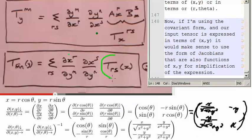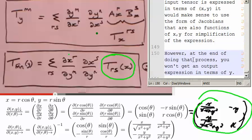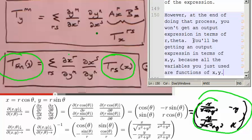Now, if I'm using this covariant form, and our input tensor is expressed in terms of x,y, it would also make sense to use the form of the Jacobians that are also functions of x,y, for simplification of the expression. However, at the end of doing that process, you're not going to get an output expression in terms of y, or in terms of r theta. You'll be getting an output expression in terms of x,y, because this is in terms of x,y, this is in terms of x,y, all the variables you just used are functions of x,y.